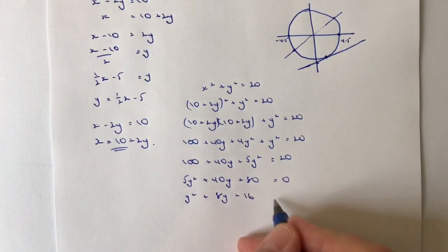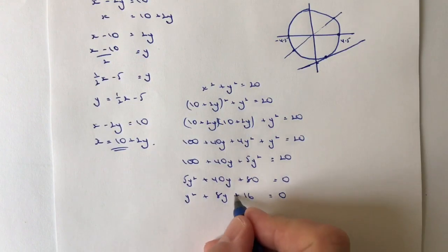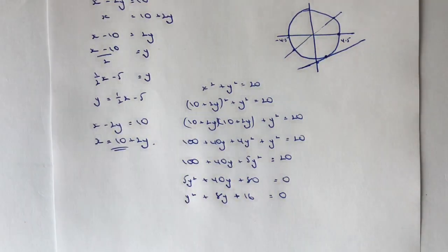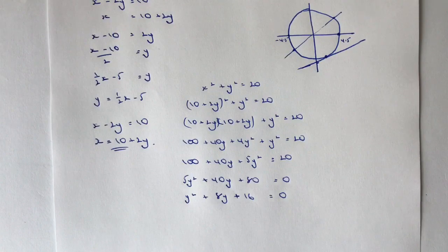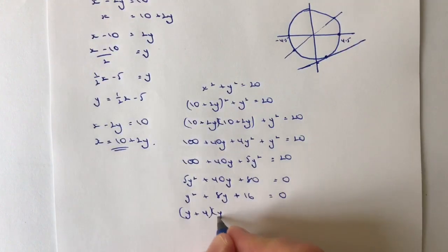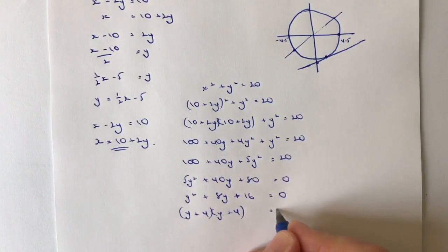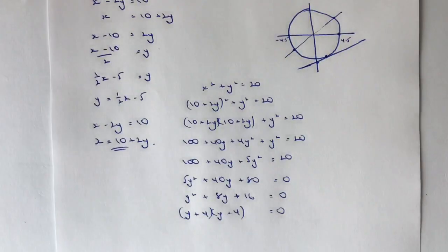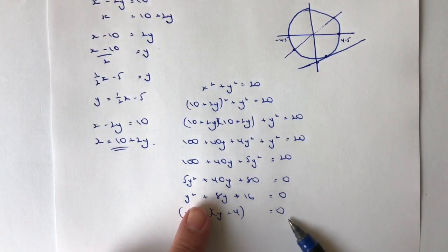And then it's a case of factorizing that. Now you might recognize that actually I can factorize that as y plus 4 times y plus 4 equals 0. So in other words, what we're saying is that there is only one value of y, and that is if y plus 4 equals 0, then y must equal minus 4.